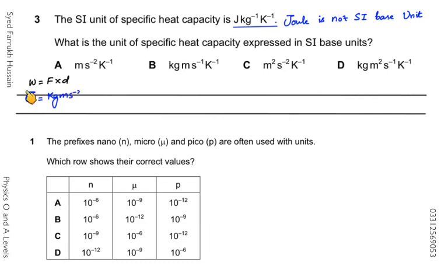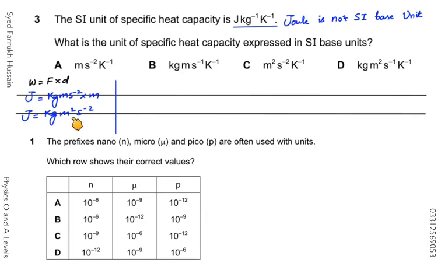By the definition of joule, it is the SI unit for work. Using W = F × d, we find the SI base unit for joule: joule = kg·m·s⁻² × m = kg·m²·s⁻². So instead of joule in joule per kilogram per kelvin, we write kg·m²·s⁻², with kg⁻¹ and K⁻¹, which after simplification becomes m²·s⁻²·K⁻¹. So option C is the correct answer.